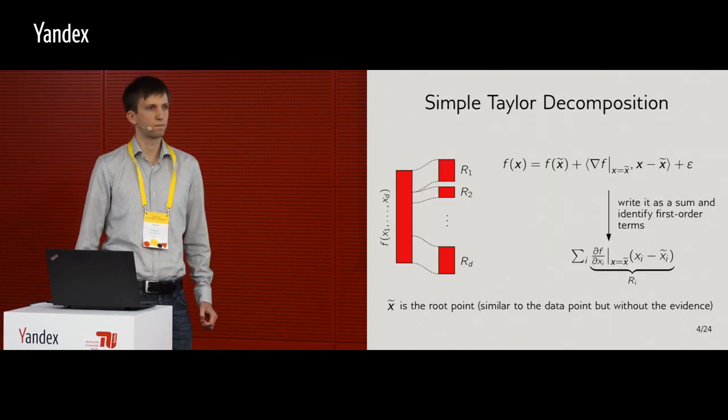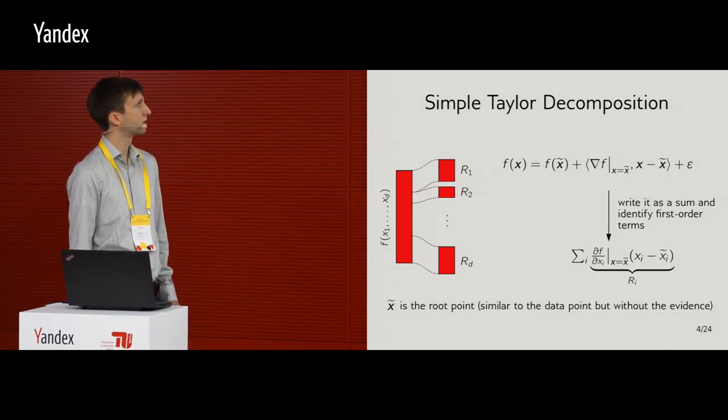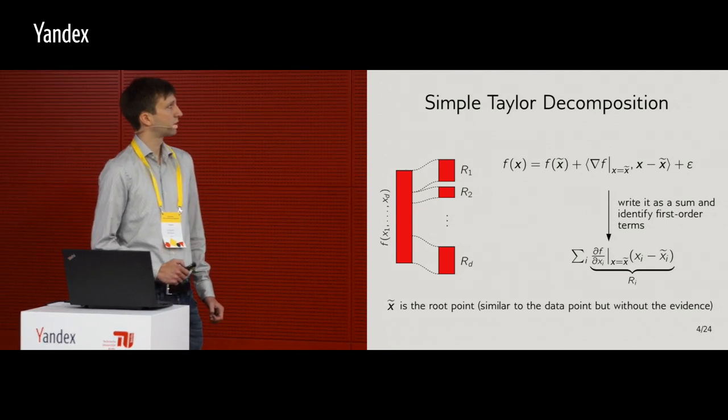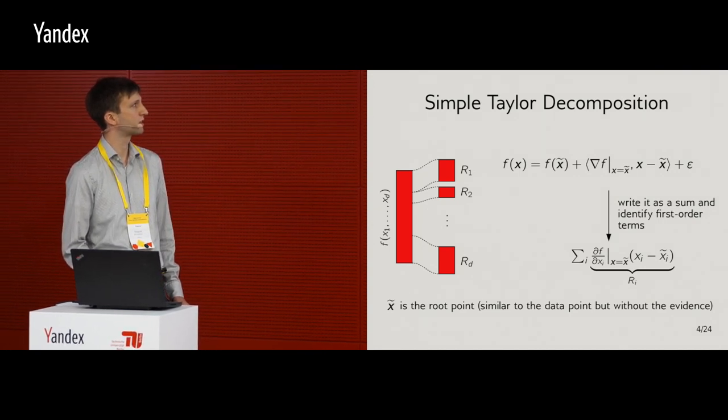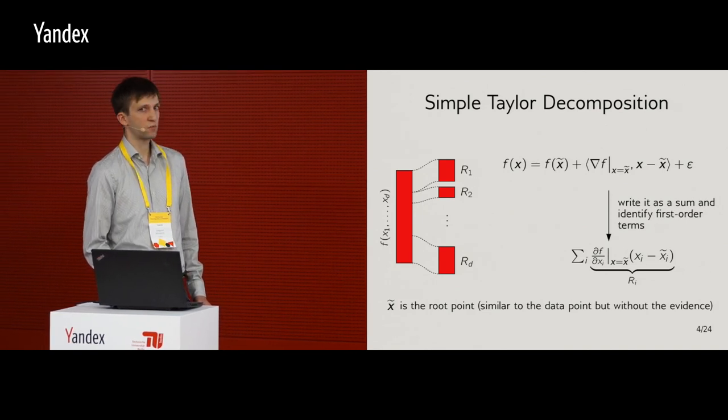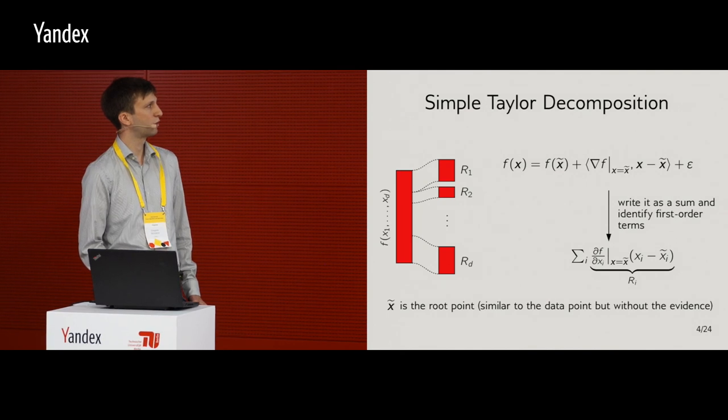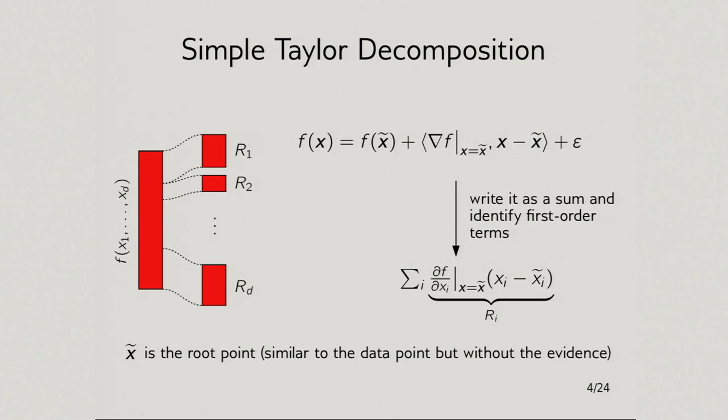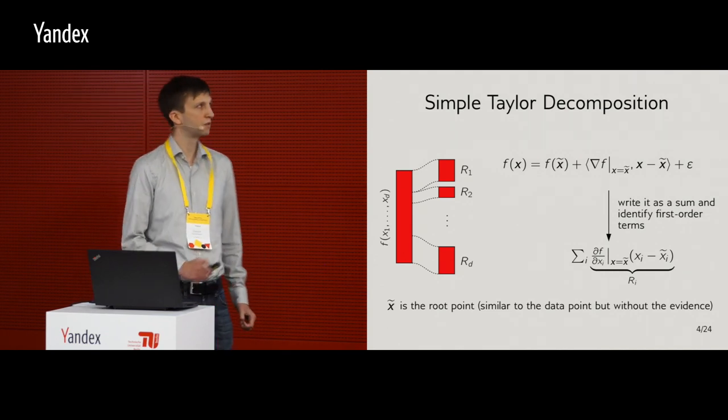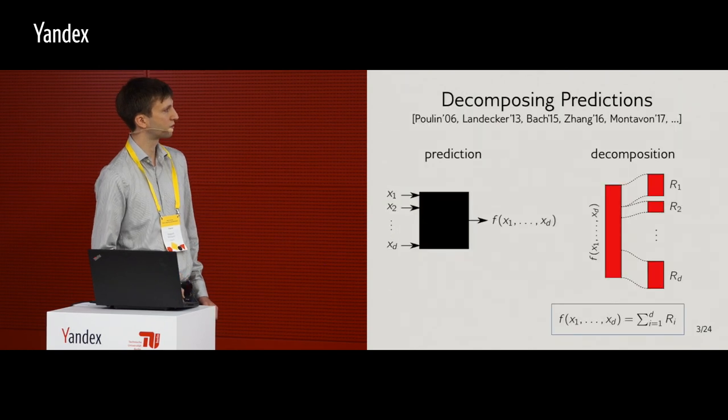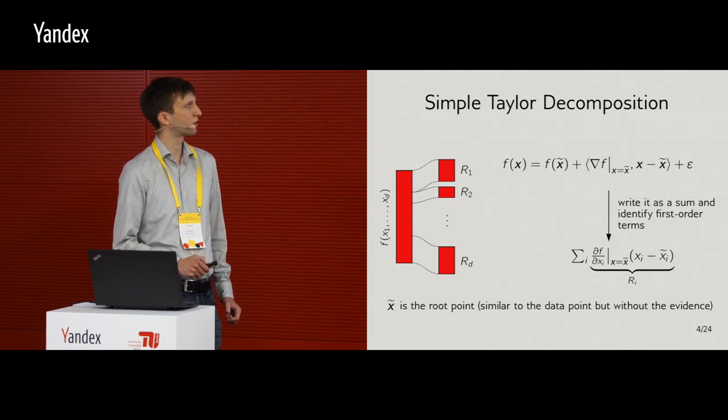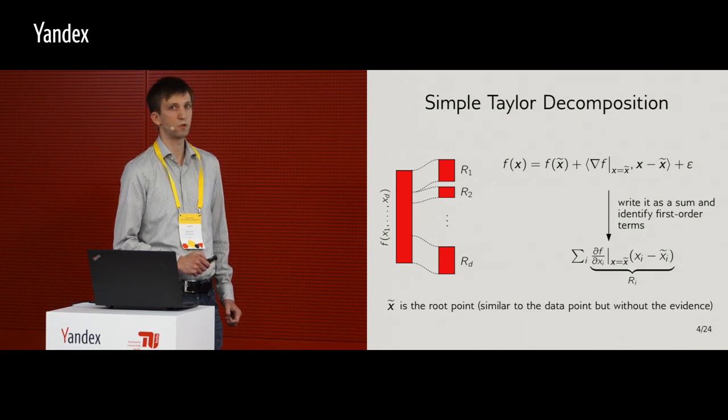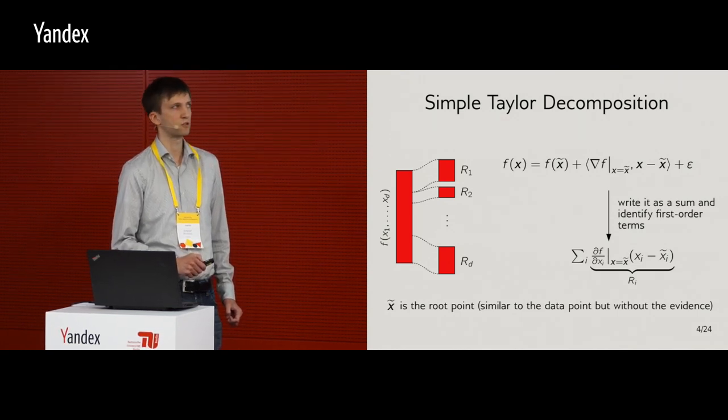So maybe the simplest method or the most direct method to perform this decomposition is Taylor. The idea is that you will take your function and perform a Taylor expansion at some reference point x tilde. And then we will add the linear terms and then the higher order terms. And then we will see, we will look at the linear terms. It's actually a sum over all the input variables. And then all these elements, all the elements of the sum, can be identified as the relevance of individual variables. And typically, to be able to guarantee this conservation property we had below, we will want to make this term very small and this term very small as well. So in the ideal case, we take this at some root point of the function and we consider a linear model such that this doesn't exist.